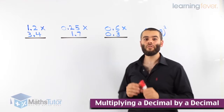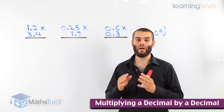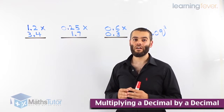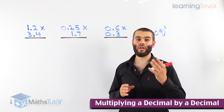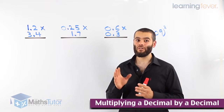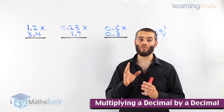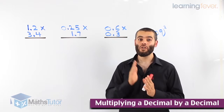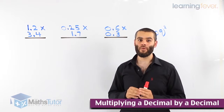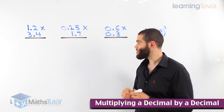I'm going to show you how to multiply a decimal by a decimal. Previously, I showed you how to multiply a decimal by a whole number. Now we're going to show you how to multiply a decimal by a decimal. There is one rule you need to remember. Let's see how it's done.